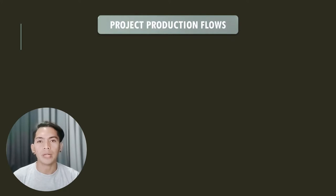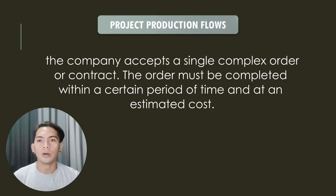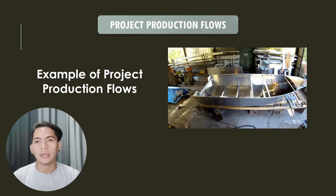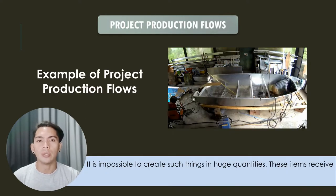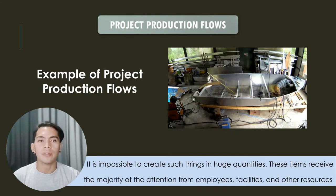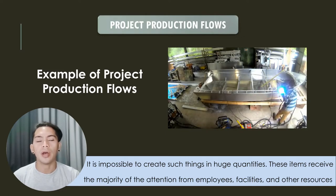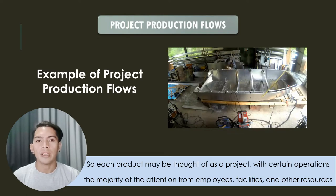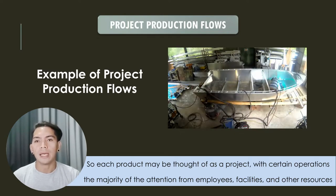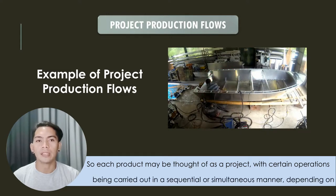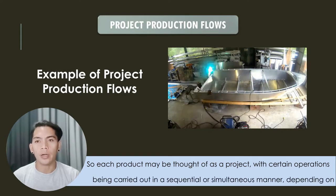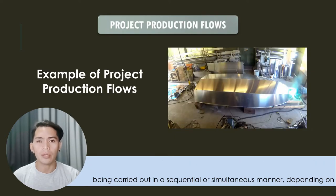For project production flows, the company accepts a single complex order or contract. The order must be completed within a certain period of time and at an estimated cost. For example, creating a boat — it is impossible to create such things in huge quantities. These items receive the majority of attention from the employees, facilities, and other resources. Therefore, each product may be thought of as a project, with certain operations being carried out in a sequential or simultaneous manner depending on the nature of the product.